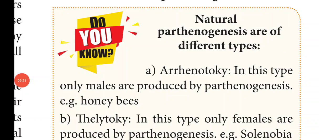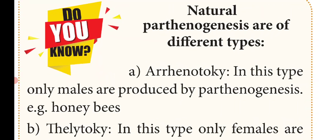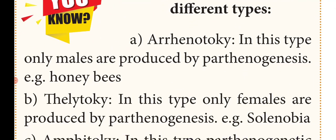There are different types of natural Parthenogenesis. Arrhenotoky: in this type, only males are produced by Parthenogenesis. Example: honeybees. Parthenogenesis commonly occurs in lower invertebrates such as ants, wasps, and honeybees.